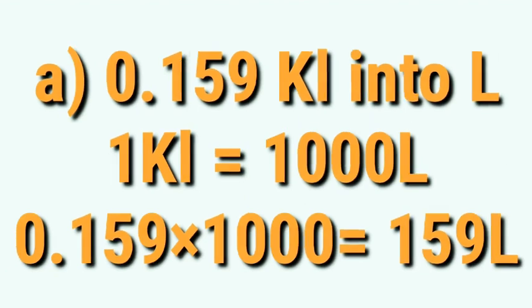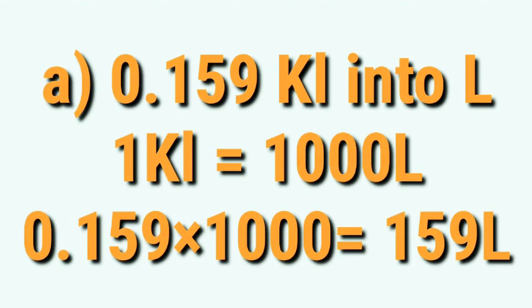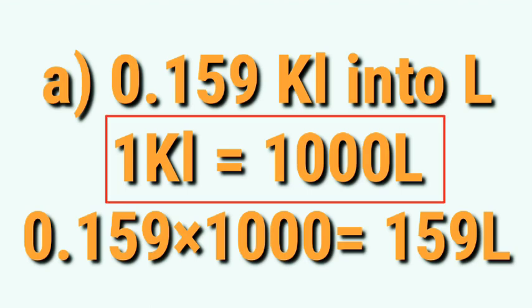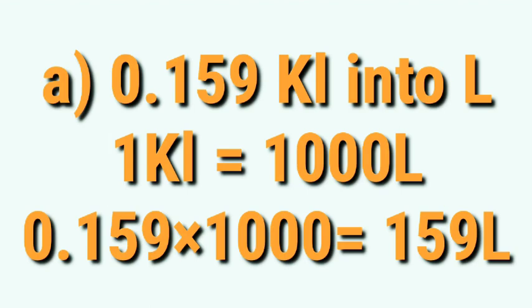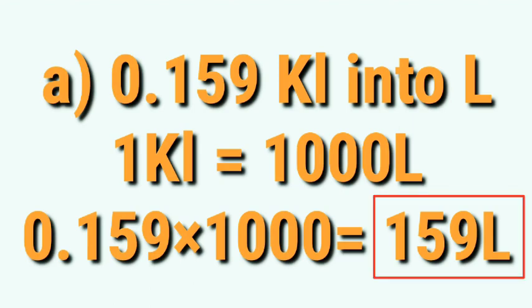First question: 0.159 kiloliters — convert into liters. 1 kiloliter equals 1000 liters, so multiply by 1000. 0.159 multiplied by 1000 — the decimal shifts 3 places ahead. The answer will be 159 liters.